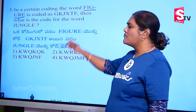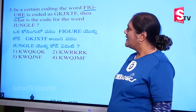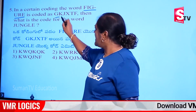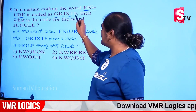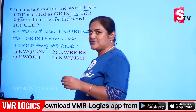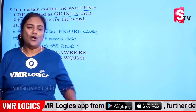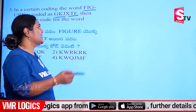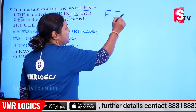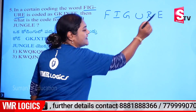Now, the next model is FIGURE. That is code GKJXTF. Now, this is the question — this code will be added to this one. F-I-G-U-R-E.